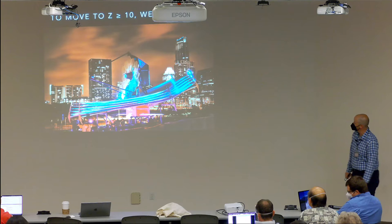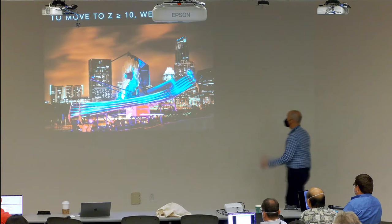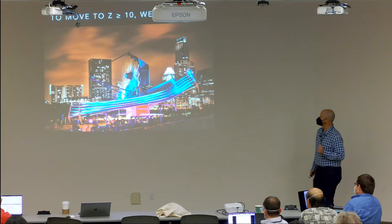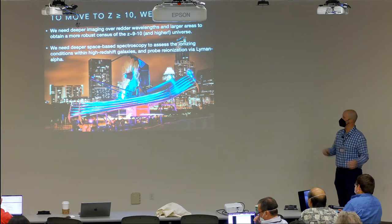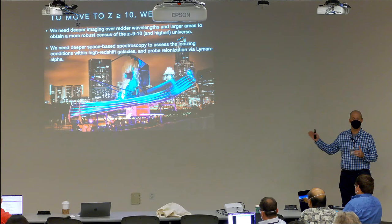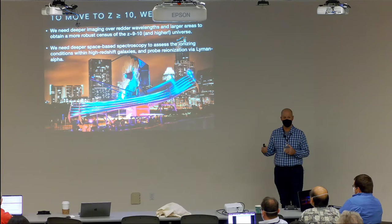Now let's move on to JWST. We got a full-scale model back in 2013 when we thought the telescope would launch in 2018 — little did we know. What can we do with JWST? Deeper imaging of course, but really it's those redder wavelengths accessible with JWST that allow us to do robust work at redshift 10. And pushing to higher redshifts with spectroscopy will be the real game changer.